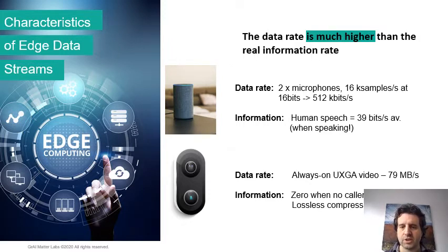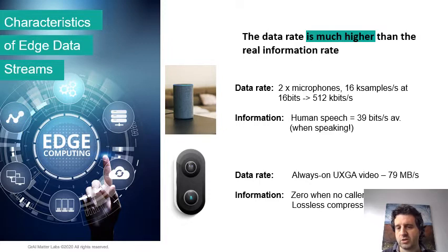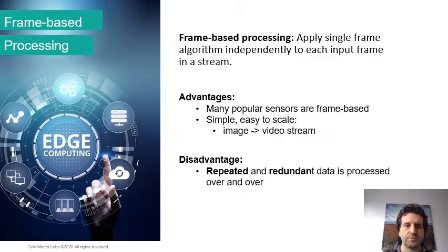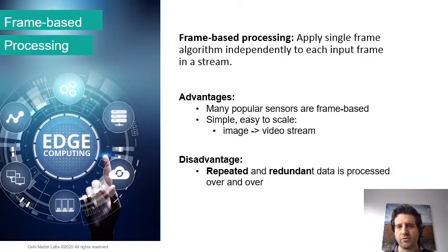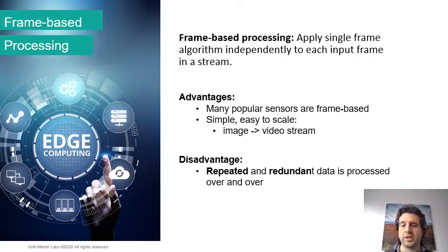The same thing happens for cameras. So if you have a camera, you're getting 79 megabytes per second on a UXGA video. But actually, when there's no meaningful content in terms of information, we are talking about zero information of interest. On the other hand, if we think about the way we currently do the processing of these systems, we are kind of always doing what I would call a frame-based processing — a way of handling the input where we apply an algorithm that works for an image independently to each image in the stream.